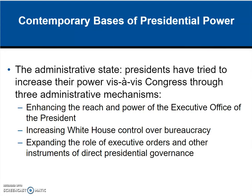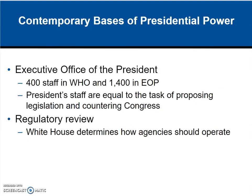When we look at executive orders and agreements — actions the president can take unilaterally — that's also a sign that the president has really expanded the use of administrative mechanisms to gain and expand their power. The executive office has 400 staff members just in the White House offices, and then 1,400 in the EOP, the Executive Office of the President. Their jobs are basically to propose legislation and to interact with Congress to get their agenda passed.